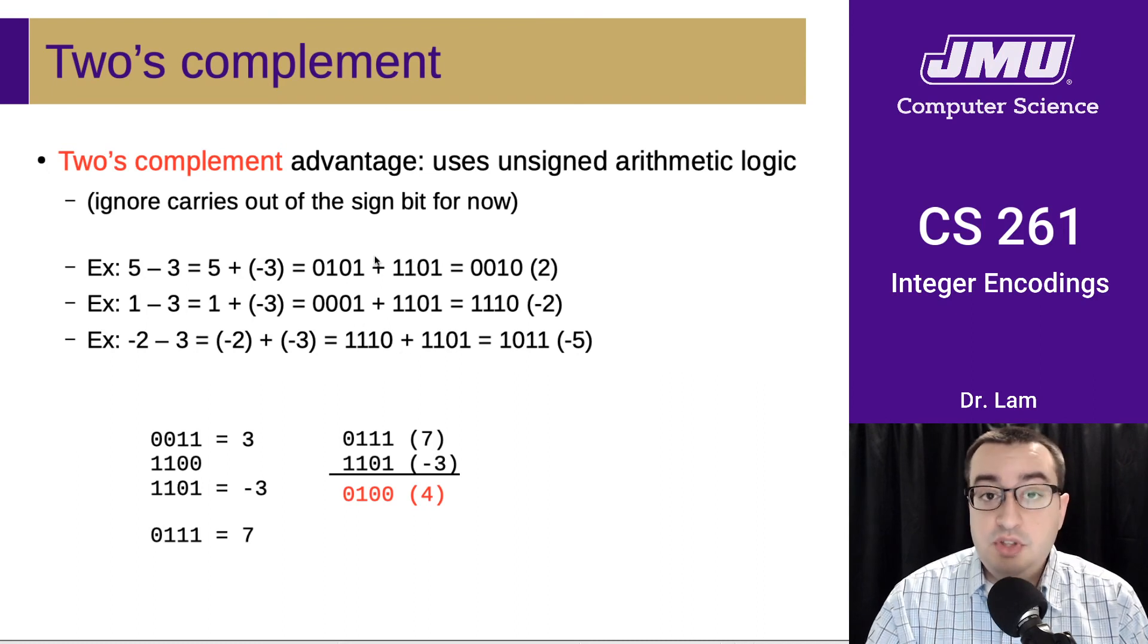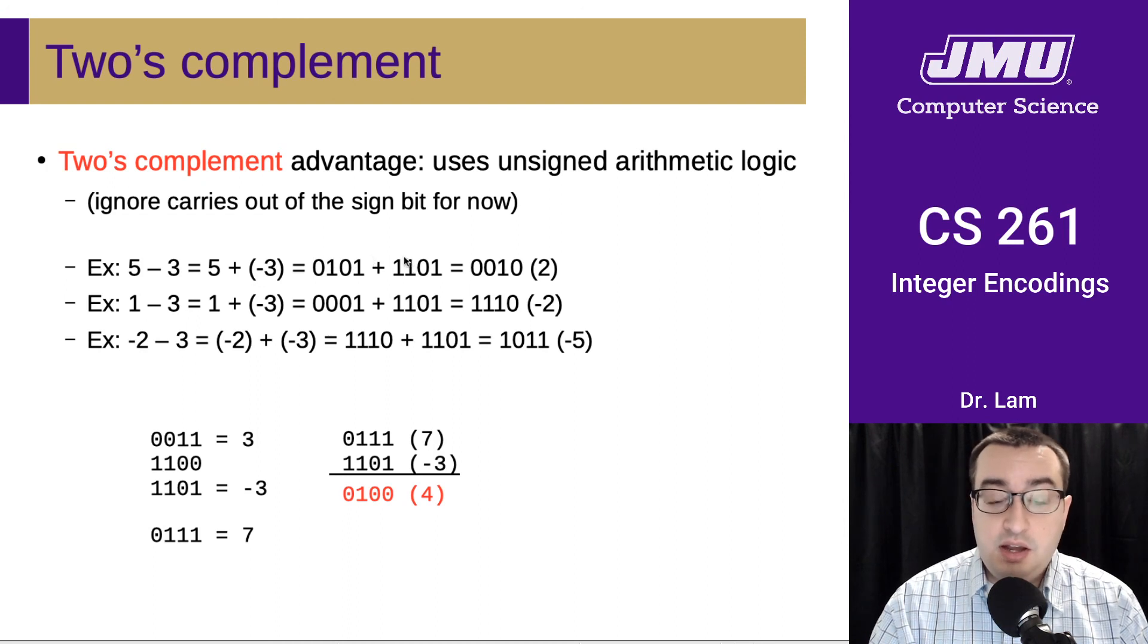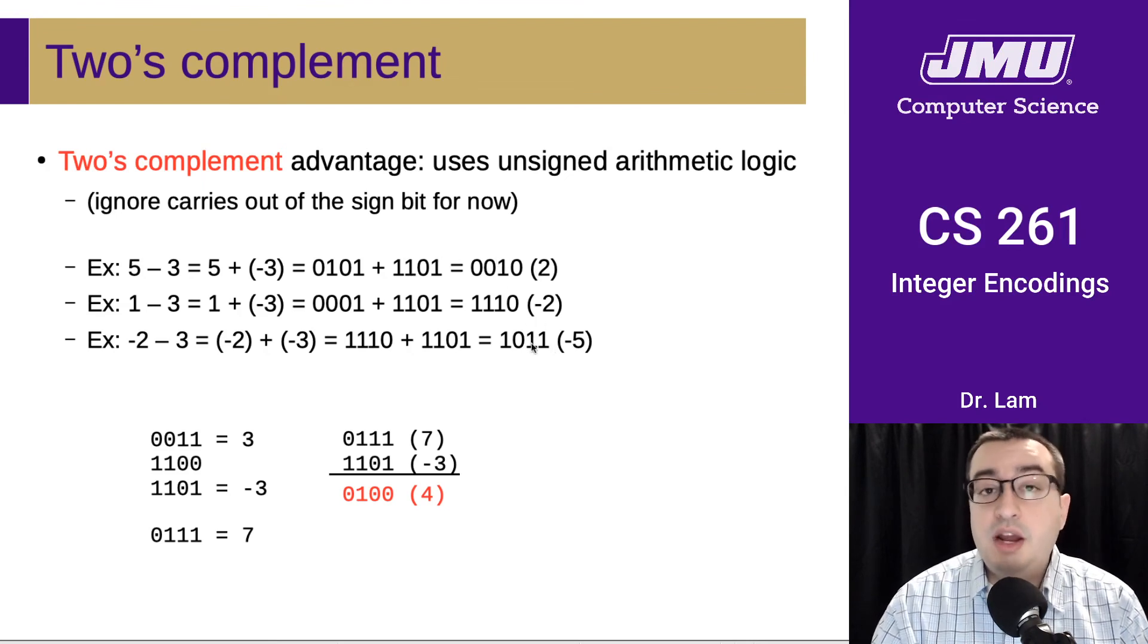And then you do the arithmetic and you should write out these numbers and line them up and do the arithmetic in base 2. And what you will get is if you ignore any carries out of the sign bit for now, then you will get the answers that are over here on the right, which are the answers that we would expect to get. And there's another example down here.